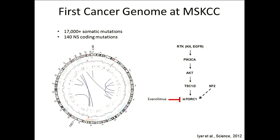It turns out the patient had a very complicated genome. Even though we had done multiple assays that were really cutting-edge at the time, we missed 17,000 mutations that were in this patient's tumor. But we can pretty quickly narrow that down to 140 that are in coding regions. It's a real testament to how much we've learned from tumor and normal genomes that we can map all these 17,000 mutations and ask which ones are likely related to this woman's response to everolimus.